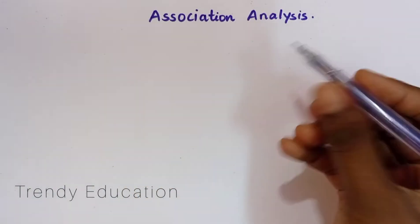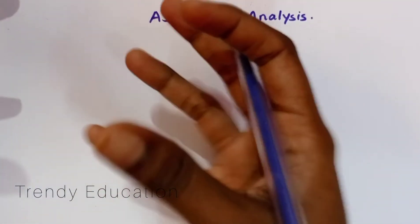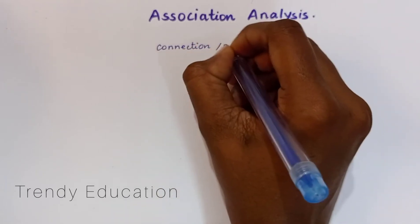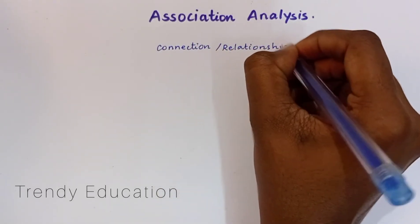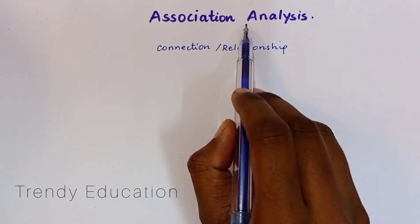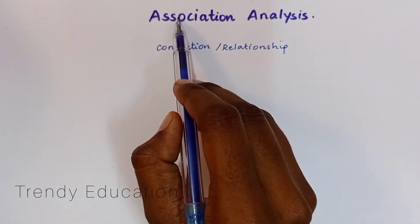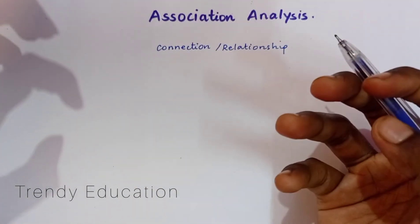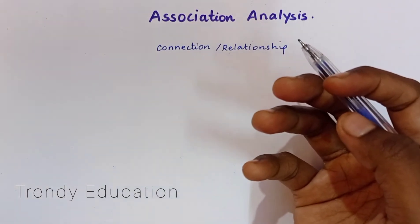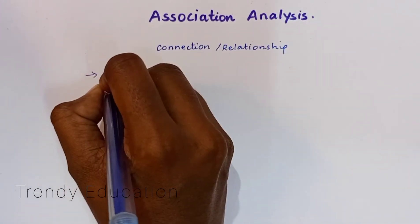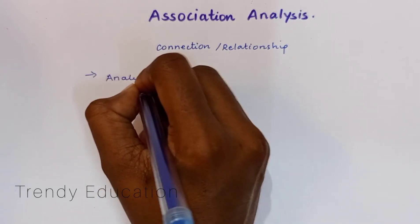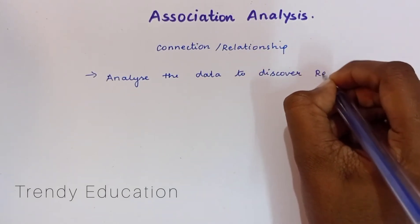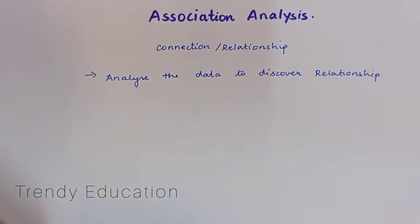The meaning of association is nothing but connection or relationship — these are the words that association means. So what is association? It means connection or relationship. Coming to association analysis, what we are going to do is analyze the relationship or connection between data. We are going to take a set of data and find the relationship or connection between the data.